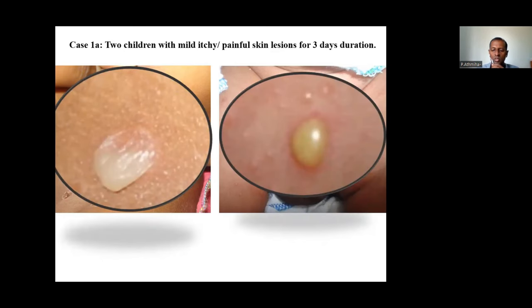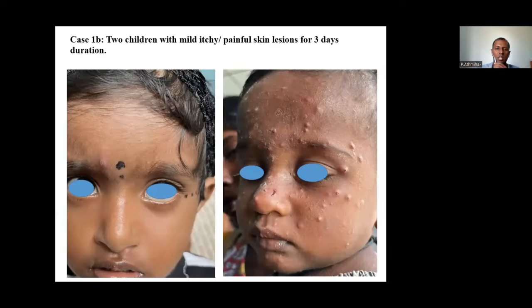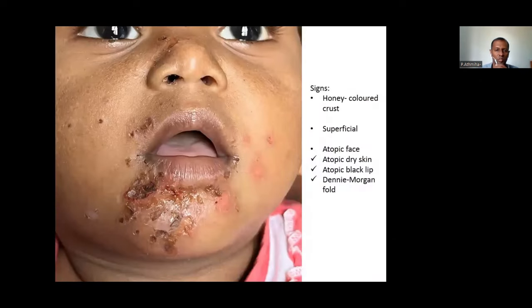The first classification: treat and review SOS. This includes superficial skin infections, contact dermatitis, and acute urticaria — short history with mild form of skin diseases. Here, our aim is not to merely care for the patient but to cure the patient. There are two children with mild itchy or painful rash.